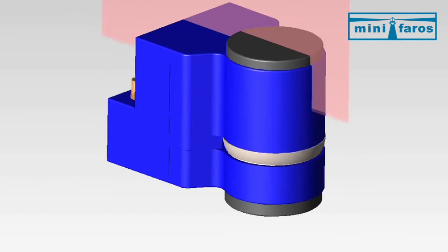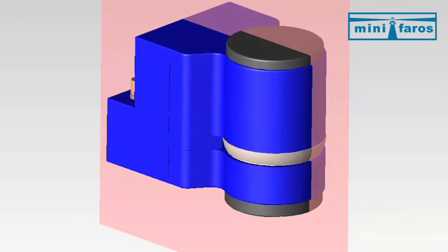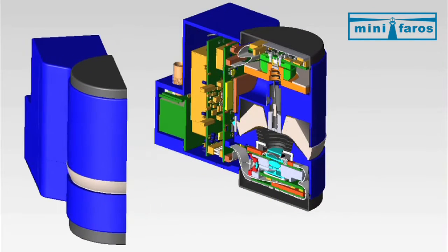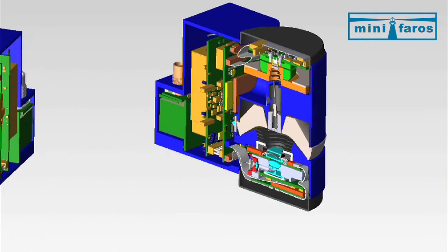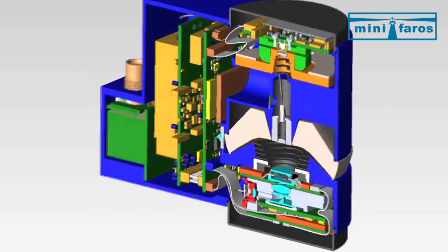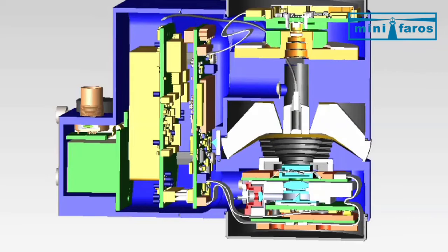The generated laser beam is deflected by the MEMS mirror into the omnidirectional lens, which directs the laser pulse into the environment. The backscattered fractions of the laser beam are collected by the omnidirectional lens and deflected into the receiver by the MEMS mirror.